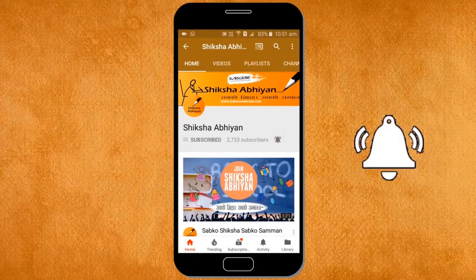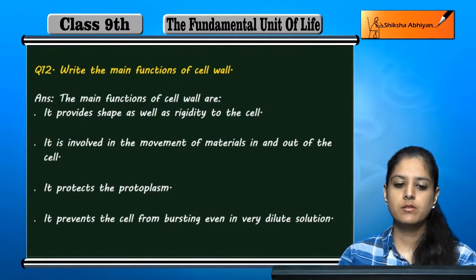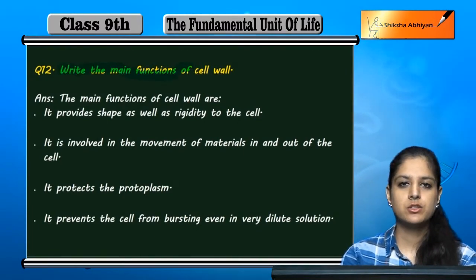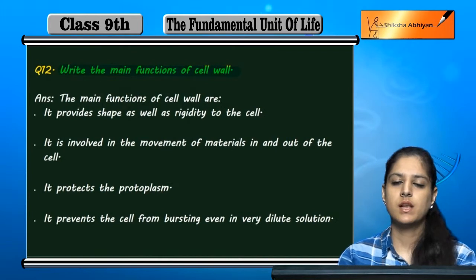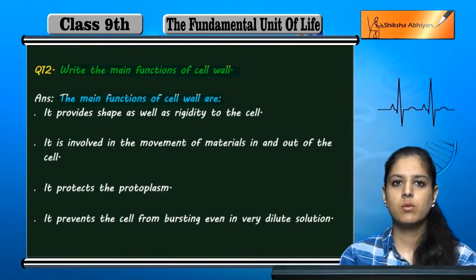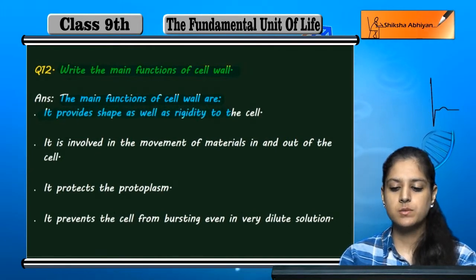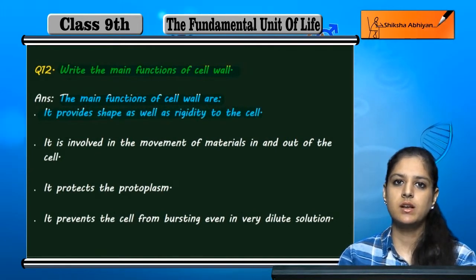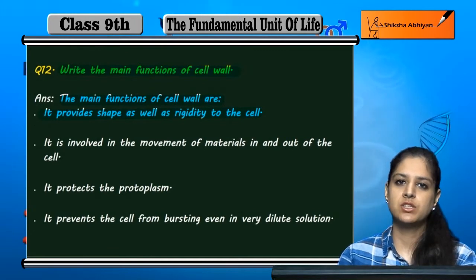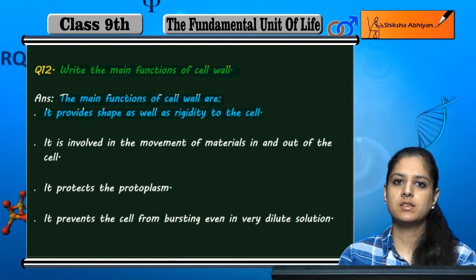Question 12: Write the main functions of the cell wall. The main functions of the cell wall are: it provides shape as well as rigidity to the cell. The cell gets its shape and firmness from the cell wall.